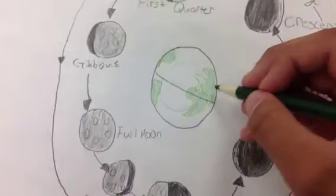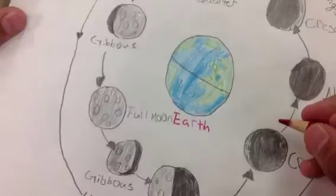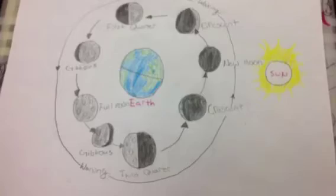Here's our Earth. This Earth is in the middle. The Sun gives off the light to make all these shapes.